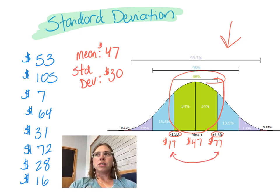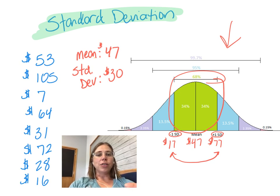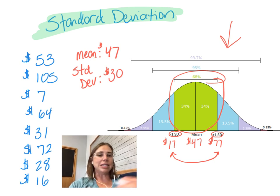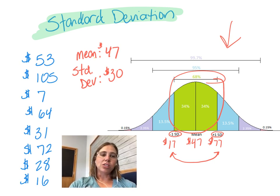You could think of this in a bigger sense, meaning that 68% of students would have a bank account between $17 and $77.